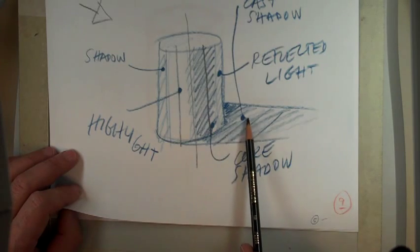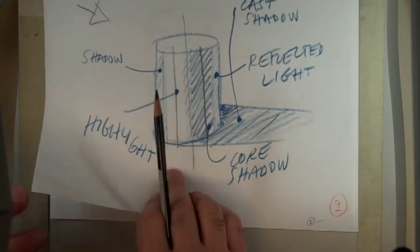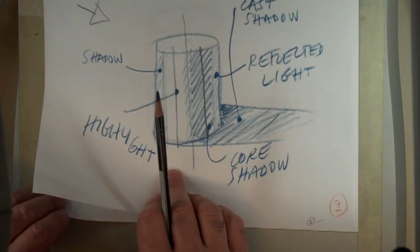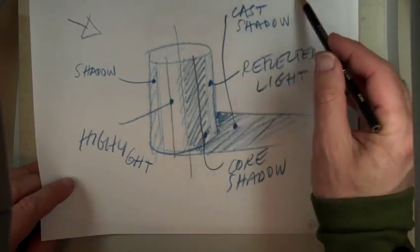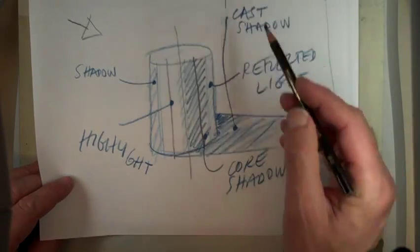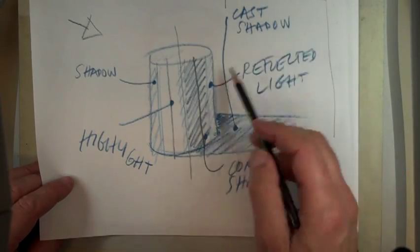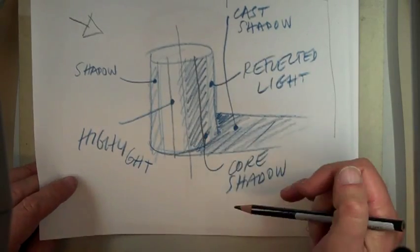Core shadow, cast shadow, and then reflected light. And you'll see in the other examples why that reflected light is really important. Reflected light just means that there's likely, in all likelihood, there's like another object, or maybe there's a wall here, and that wall is reflecting a little bit of the light that's in the room in general.